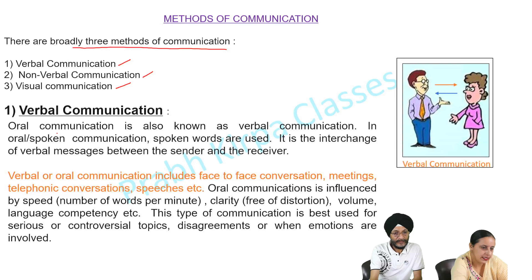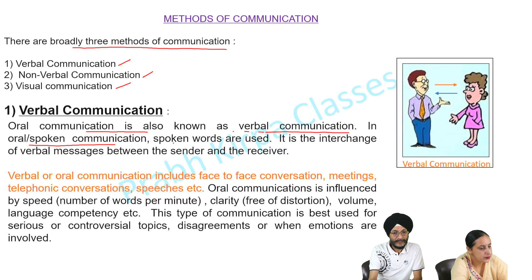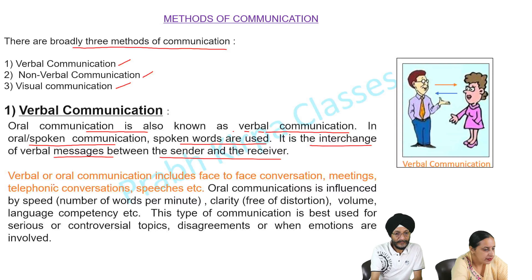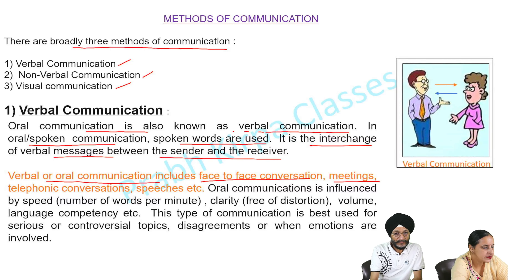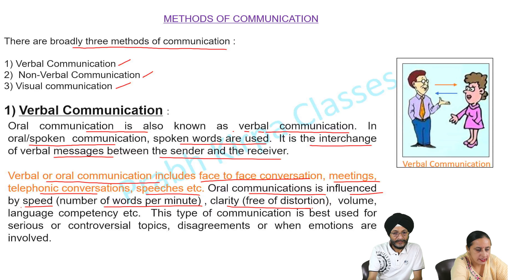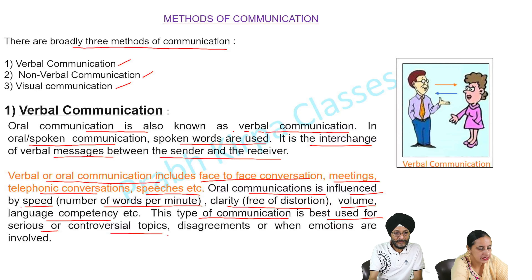Number one is Verbal Communication. Oral Communication is also known as Verbal Communication. In oral or spoken communication, spoken words are used. It is the interchange of verbal messages between the sender and the receiver. Verbal or oral communication includes face-to-face conversation, meetings, telephonic conversations, speeches, etc. Oral communication is influenced by speed, number of words per minute, clarity, freedom from distortion, volume, language competency, etc. This type of communication is best used for serious or controversial topics, disagreements, or when emotions are involved.